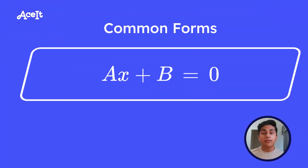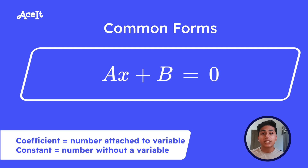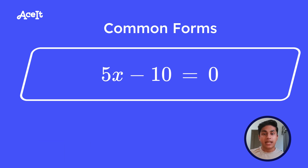There are two common forms of one variable linear equations, and here's the first one. This is when you have a coefficient, a, times a variable plus a constant, and this whole thing is set equal to zero. A coefficient is a number that's attached to a variable, and a constant is a standalone number. So let's look at this quick example: 5x minus 10 is equal to zero.